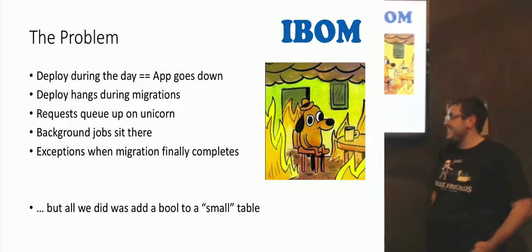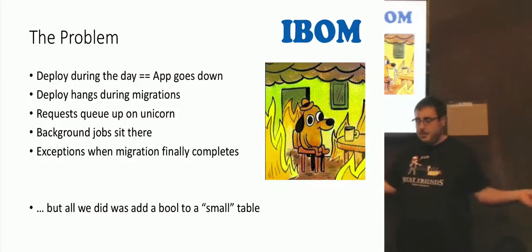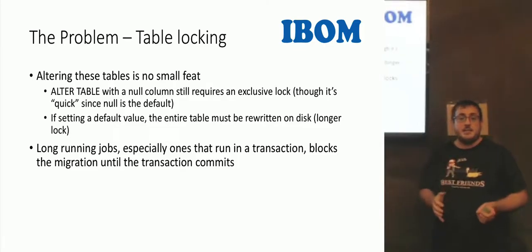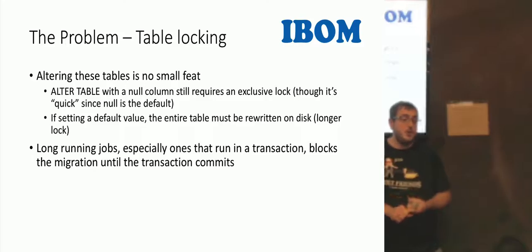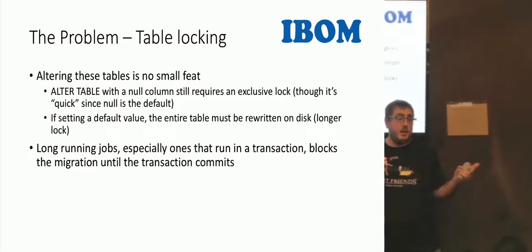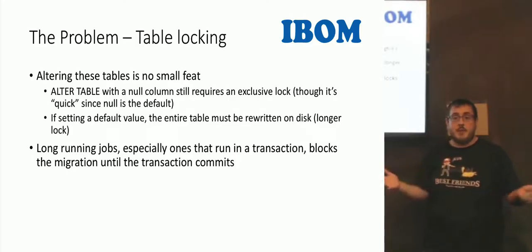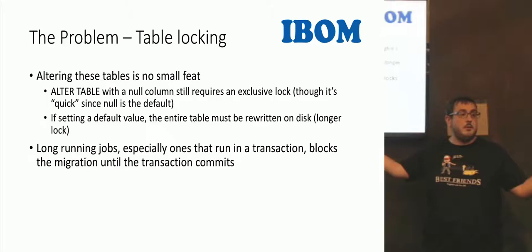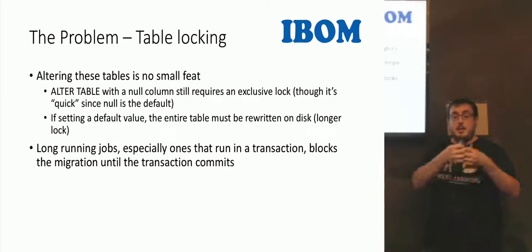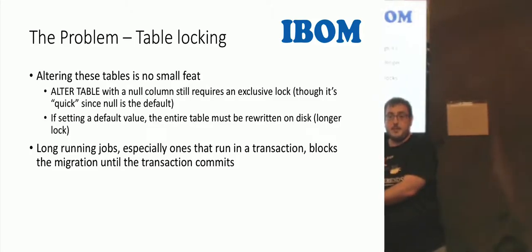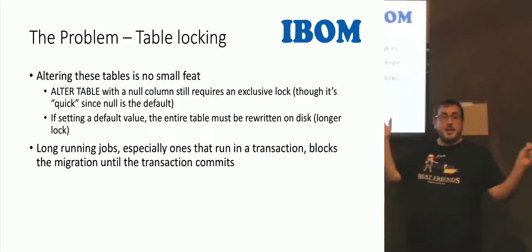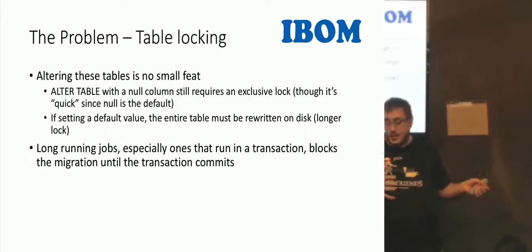Zero escalations, yes. But all we did was add a bool to a relatively small table. What's the problem? The problem is table locking. Altering a table is not a simple operation in Postgres or MySQL. An ALTER TABLE in Postgres will always ask for an exclusive lock — no reads, no writes until you're absolutely done. If you're setting a null value it's quick, because it doesn't need a table rewrite. If you're adding a default, it has to rewrite the entire data file, and while it's doing that nothing else can hit the table. Also, if you have long-running transactions, those will block the ALTER TABLE from running until those transactions complete. So ALTER TABLE says 'I'm next in line, nobody else touch this,' and then everybody else says 'I want this table and I can't get it' — that's where the lockup typically occurs.